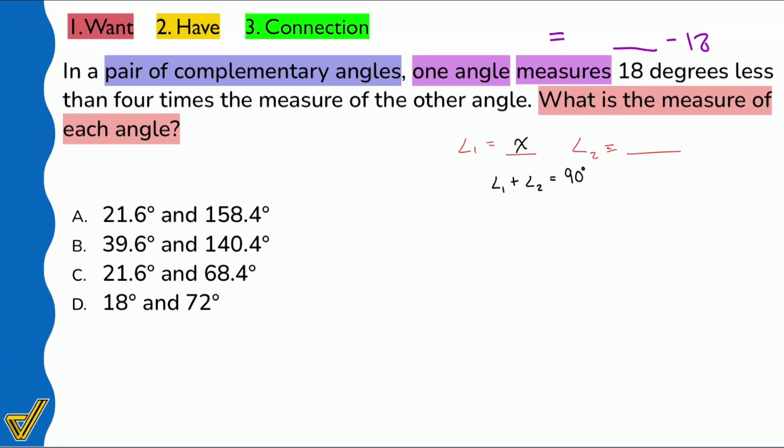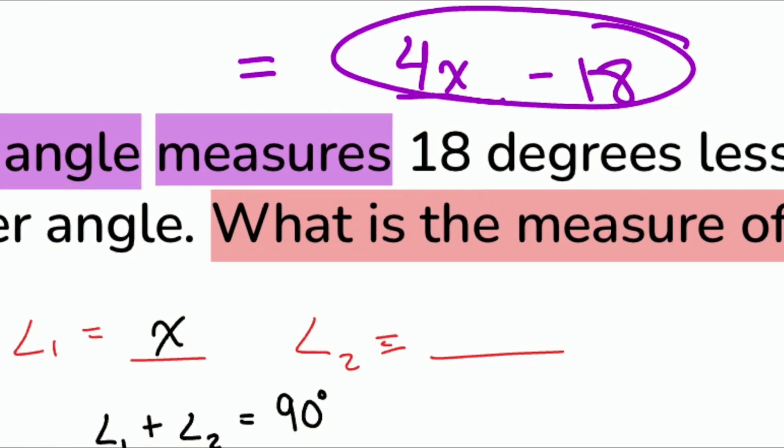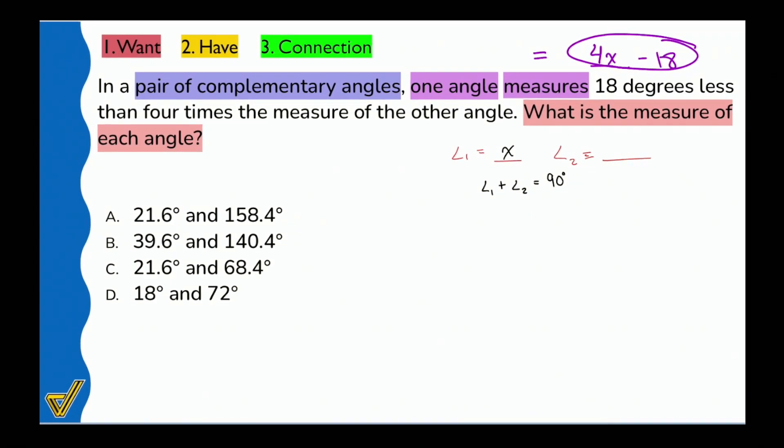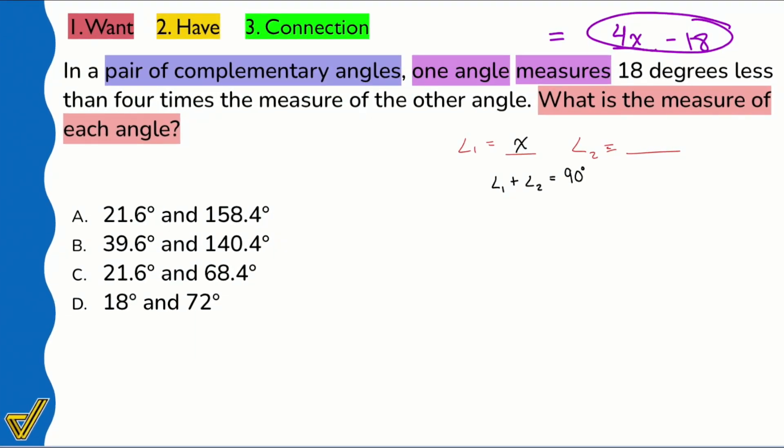So something minus 18 and four times the measure of the other angle. So if the other angle is X, then we can say four times that angle minus 18. So 18 less right over here, 18 less than four times the other angle. So we would write that down like this: 4X minus 18.